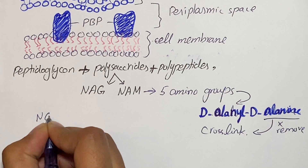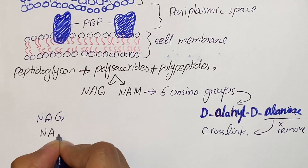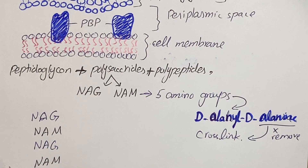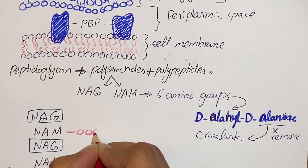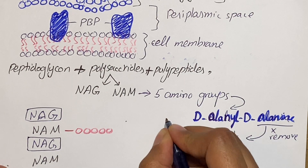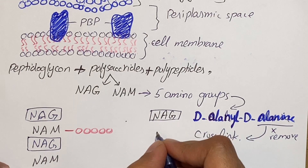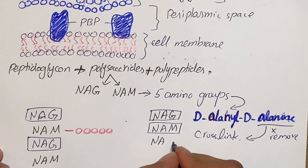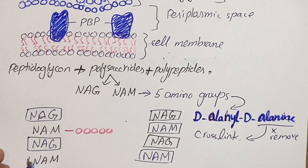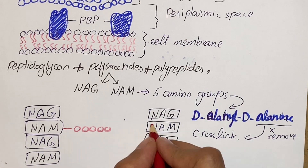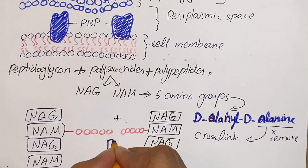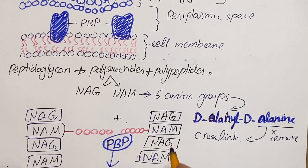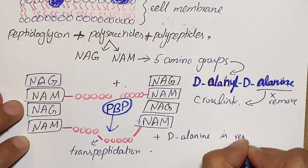Looking more deeply into this process, we can draw alternating polysaccharides to which peptide chains are attached. NAG and NAM are alternately present, and NAM is attached with peptide chains consisting of five different amino acids. Next to it there is another chain having polysaccharides consisting of two sugars — NAG and NAM — and with NAM there is a peptide consisting of five amino acids again. The penicillin-binding protein attaches to both of these chains, causes the removal of D-alanine, and brings about transpeptidation, binding both chains together.